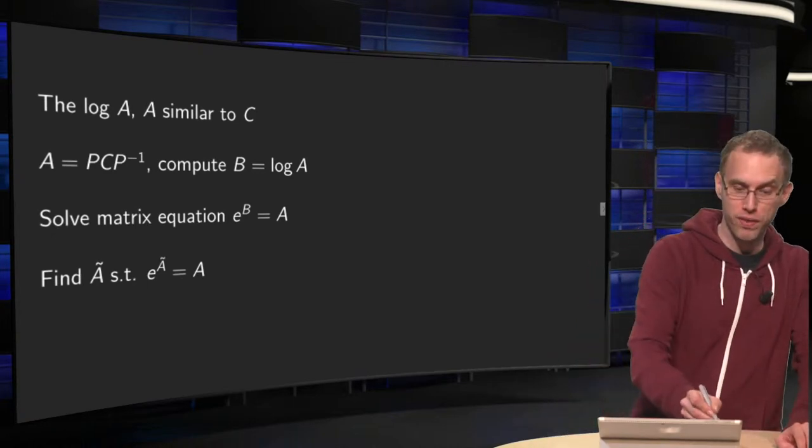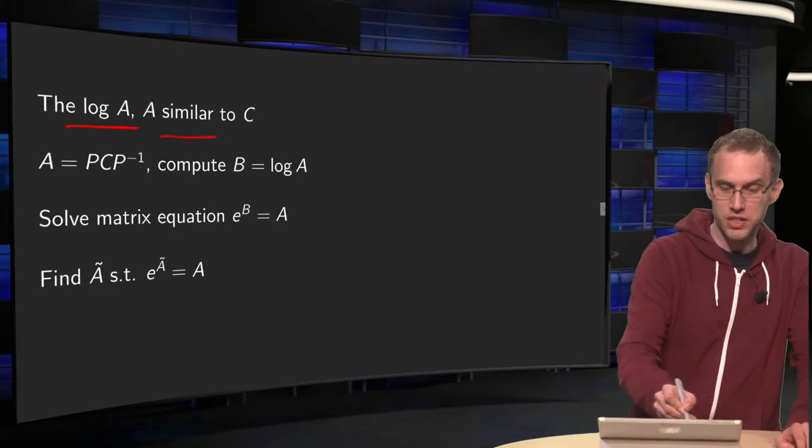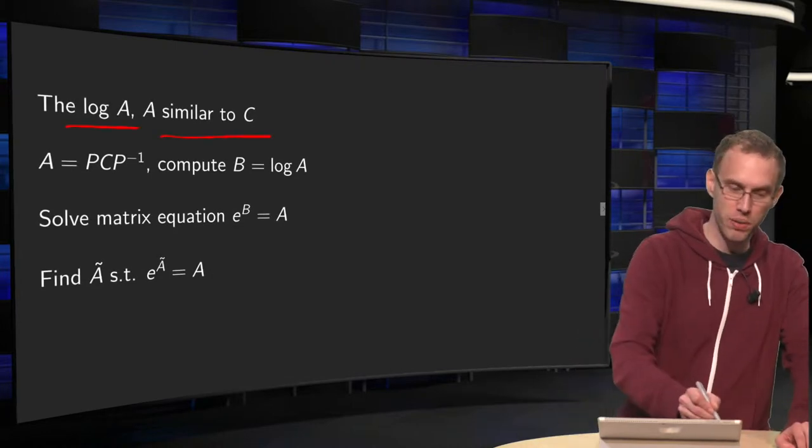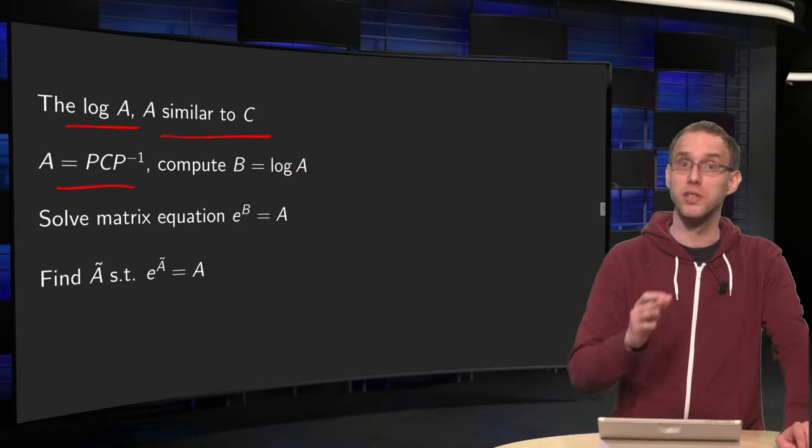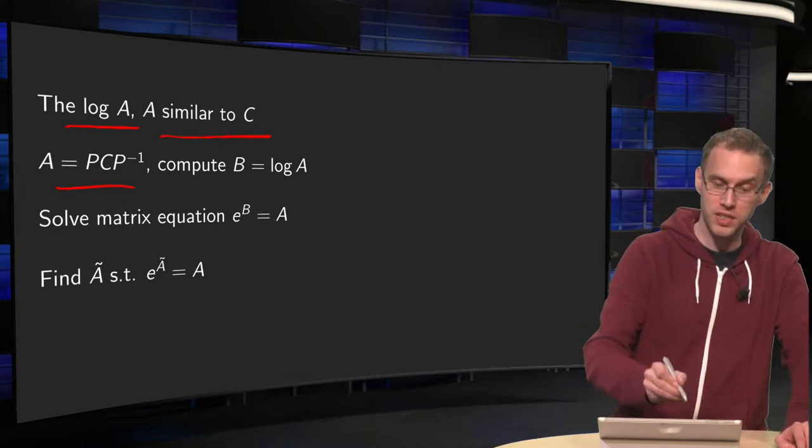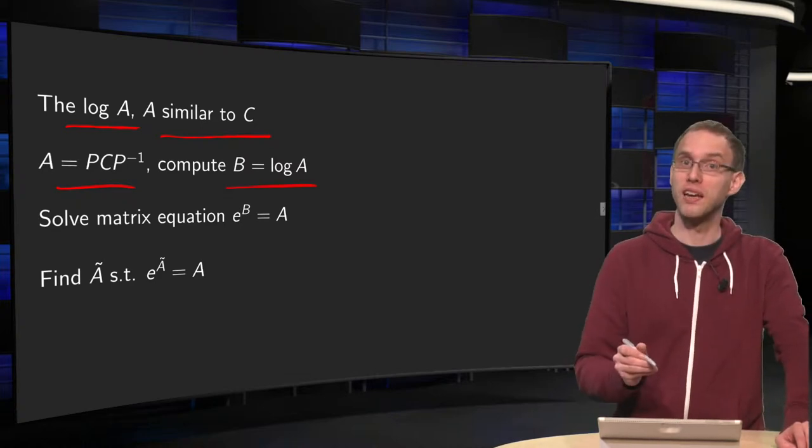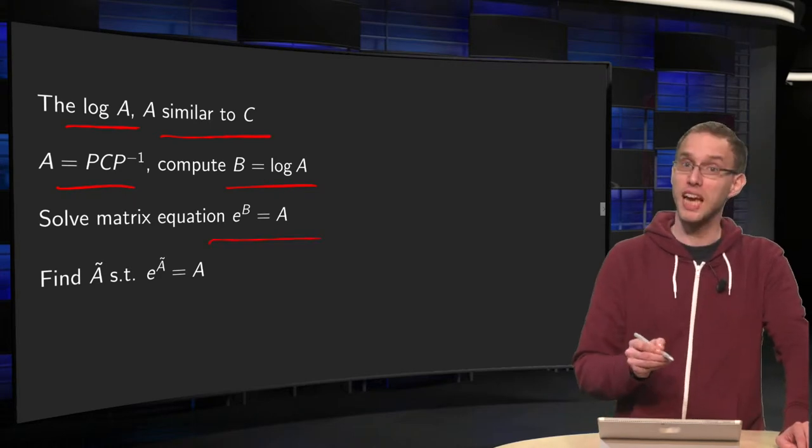So we want to compute the log of A, and now A is similar to C. So we know A equals PCP inverse, C has some special properties, and B is the log of A. Again we want to solve e^B = A.